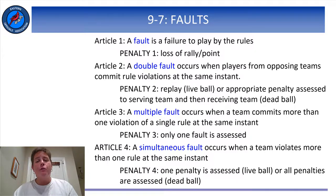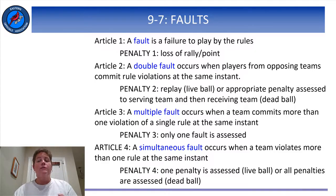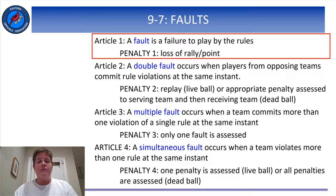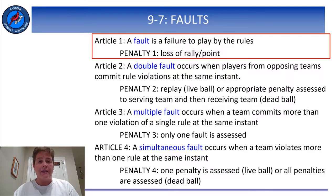The first four articles of Rule 9-7 describe types of faults. We've got some terms to learn here. When a team breaks a rule, that's called a fault, and the penalty is a point for the opponent and the right for the opponent to serve the next ball, which is called a loss of rally.